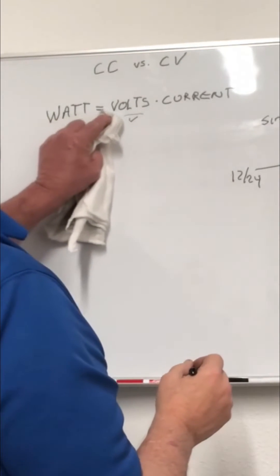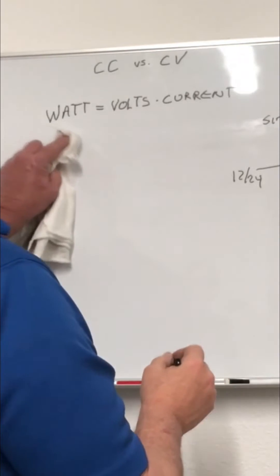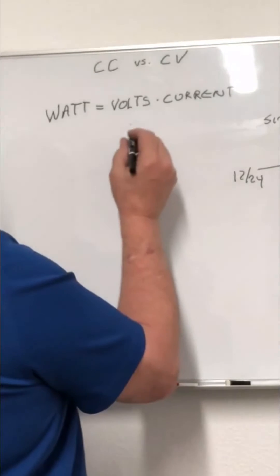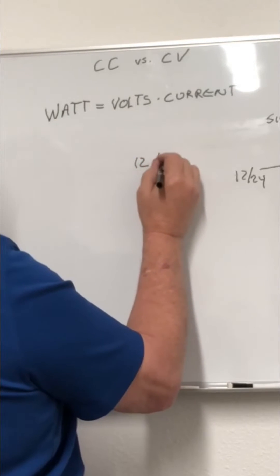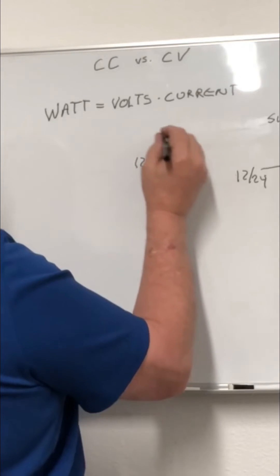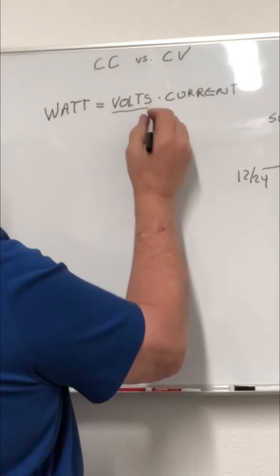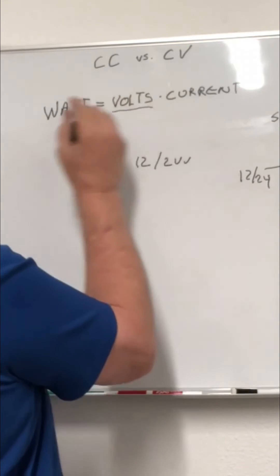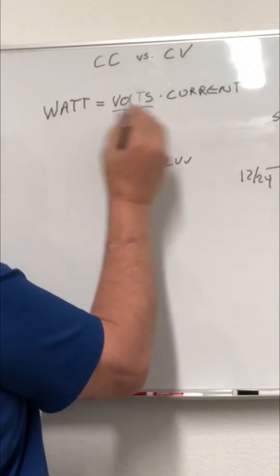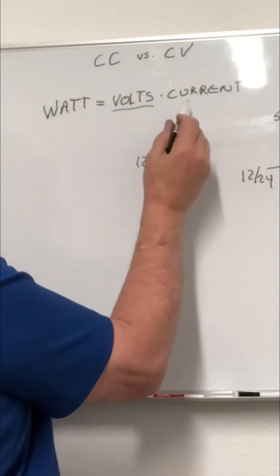Now the difference between constant current and constant voltage is with constant voltage, as in 12 and 24 volts, you're keeping the voltage constant. So by keeping the voltage constant, if one side of the equation changes, then the other side has to change.